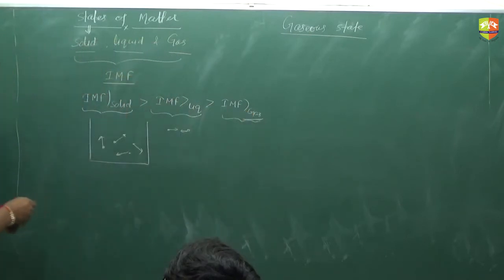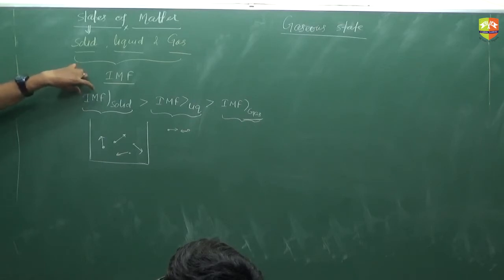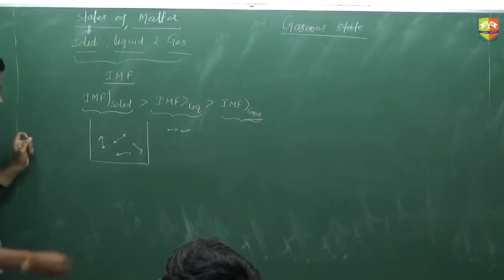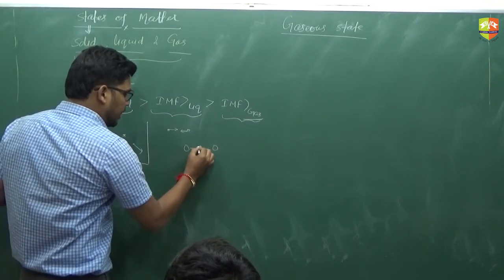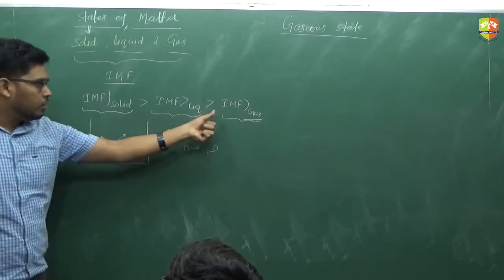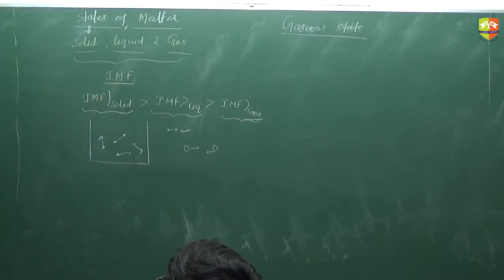When you increase the intermolecular force of attraction, gas has a tendency to convert into liquid and then into solid. When you put water into the freezer, it converts into ice. Why? Because the temperature drops, reducing kinetic energy, so water molecules start interacting more strongly with each other and convert into ice.